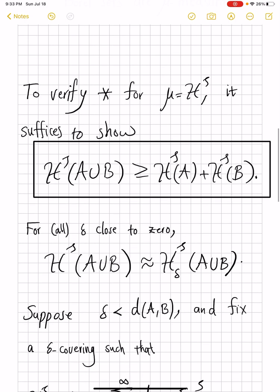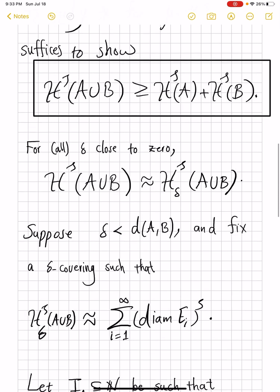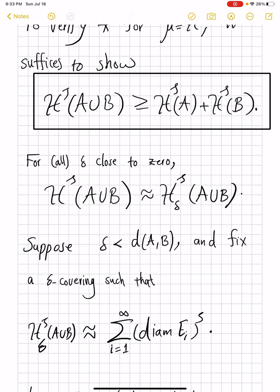Now, suppose in particular that δ is less than this distance of A and B, and we can by definition again, fix a δ-covering such that the summation of s powers of diameters is very well approximating the H^s_δ of A union B. H^s_δ of A union B is infimum of such sums, so there are sums pretty close to that infimum.